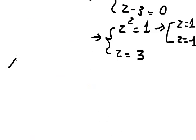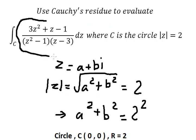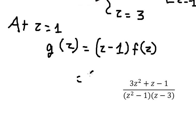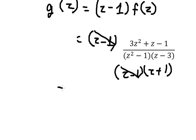Now at z equals one, we put g(z) equals (z minus one) multiplied by f(z). f(z) is given by this expression. We know that z squared minus one equals (z minus one)(z plus one), so this factor and that factor cancel and we get this simplified form.